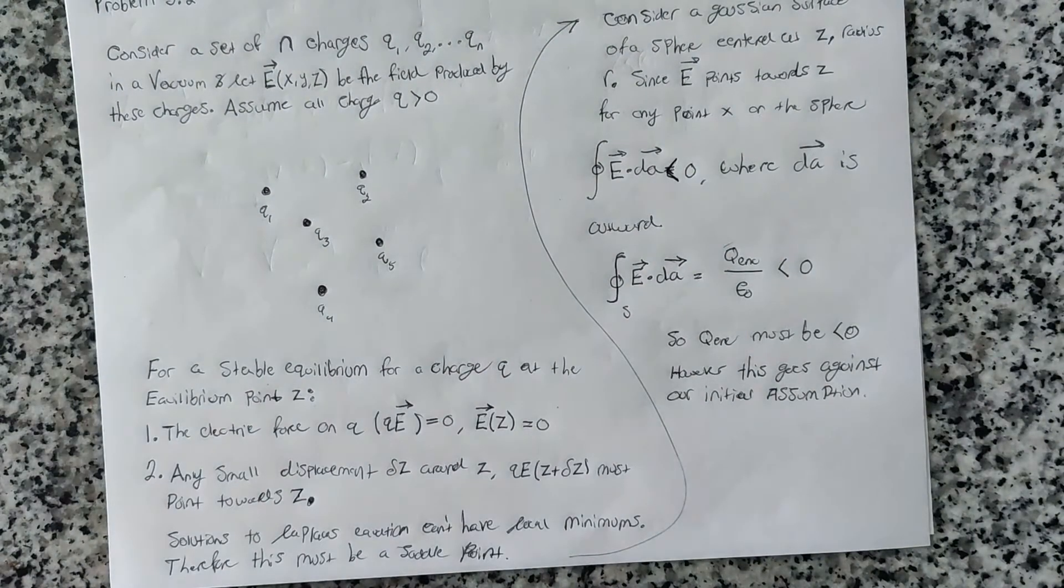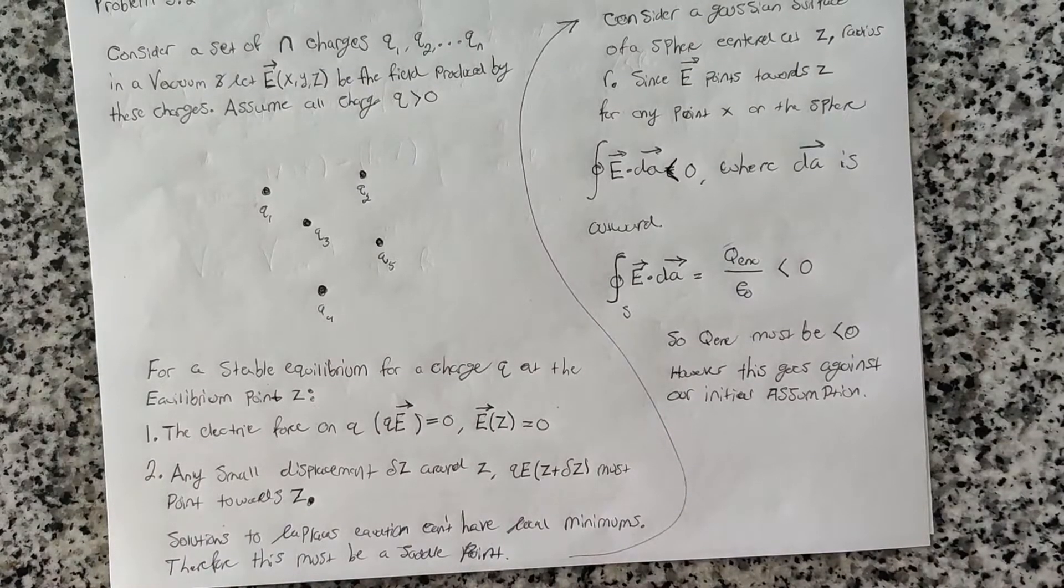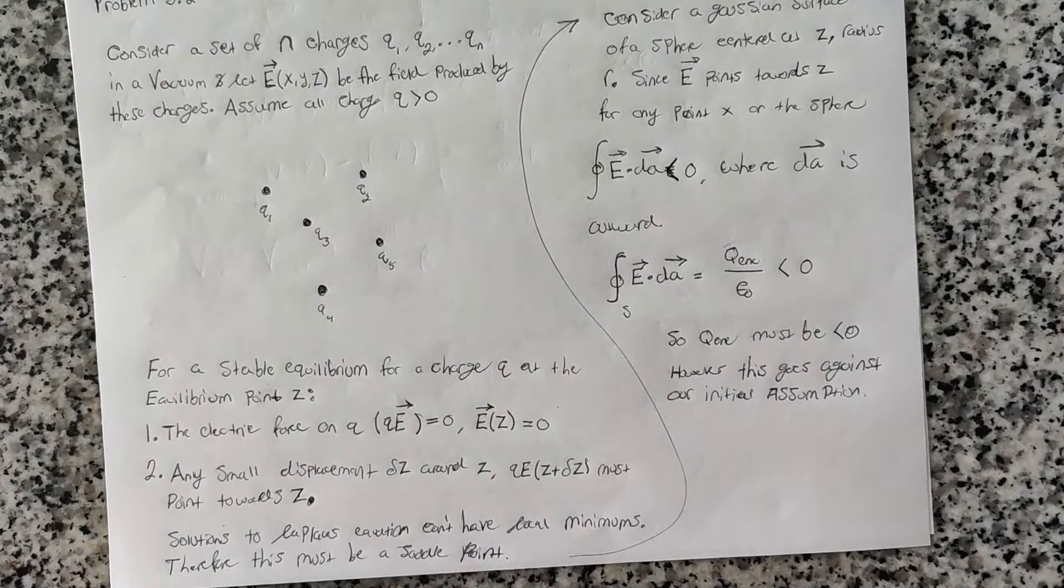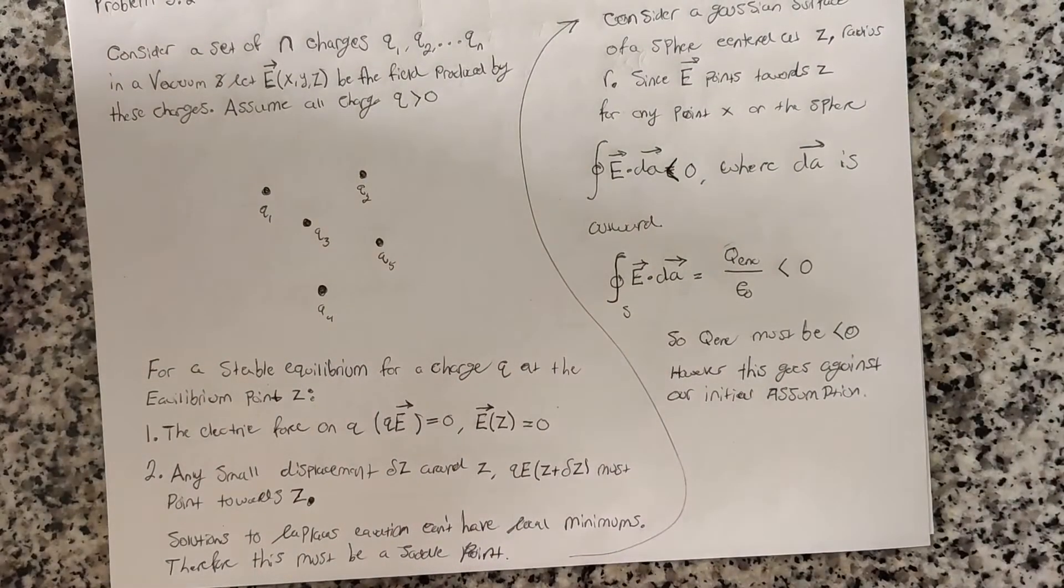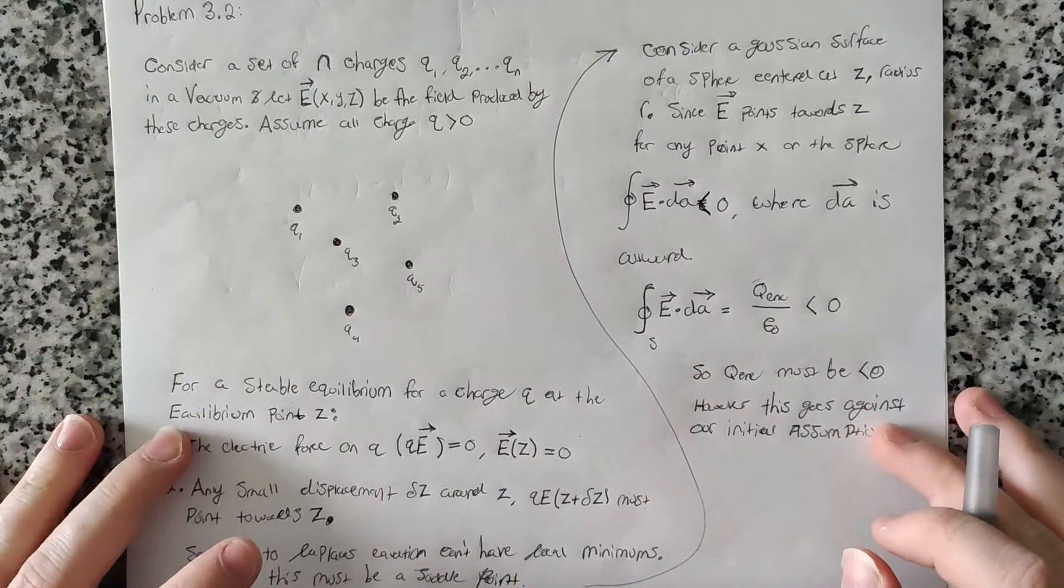The book gives a charge setup like a cube, where you have a charge at all the corners of the cube. If you put a charge in the middle of the cube, it would appear that would be some kind of stable equilibrium point because all the forces would be kind of equal, pushing on the charge and keeping it in the center of the cube. However, Earnshaw's theorem states that this is not possible.